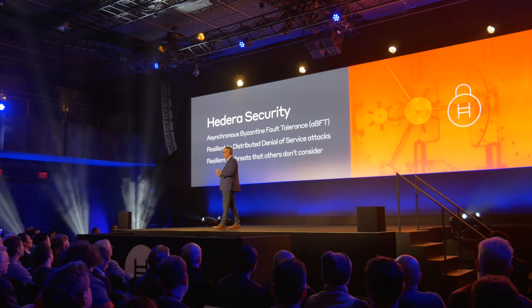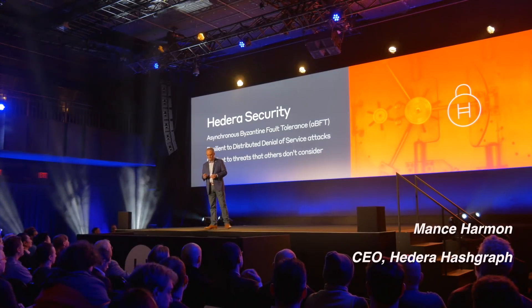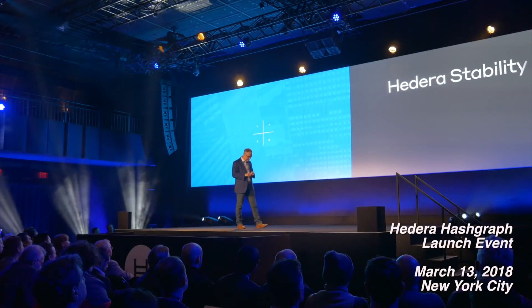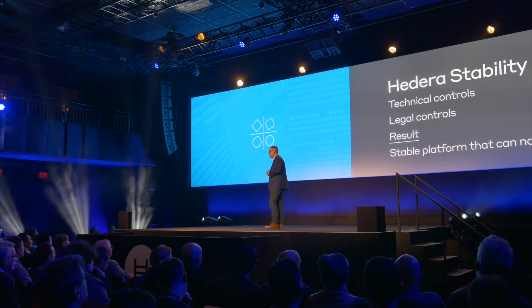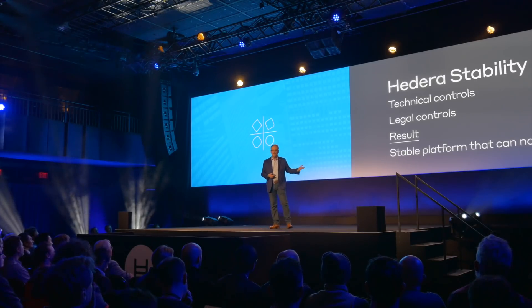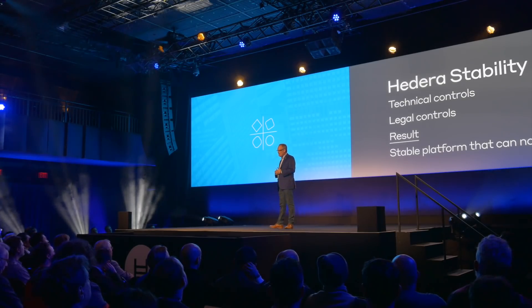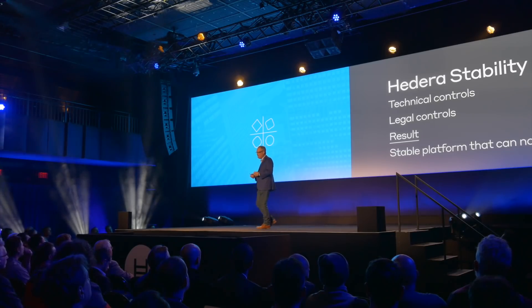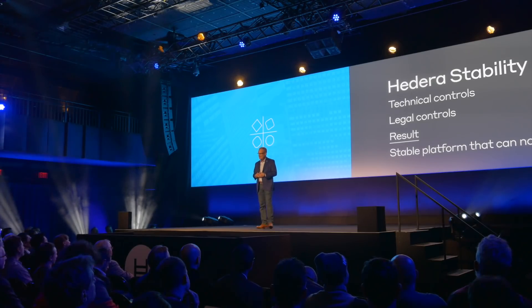Only Hashgraph has this fairness property and has math proofs that it in fact exists in the algorithm. What about stability? The Hedera platform provides a set of controls that makes it possible to actually bring stability to the platform. Tonight, Lehman will introduce a concept that we call state proofs. Simply stated, state proofs make it impossible for a network node to make a copy of the official ledger, make changes,